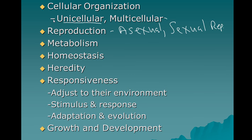This is a list of characteristics of living things where you should say all living things blank: they're made up of one or more cells, all living things have a mode of reproduction, all living things have a metabolism. So what is metabolism?